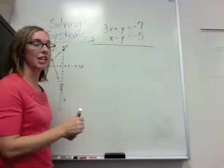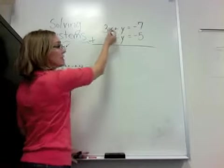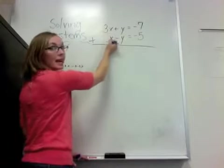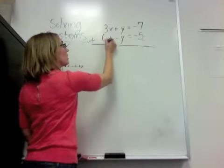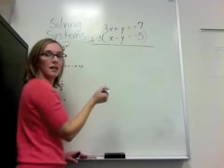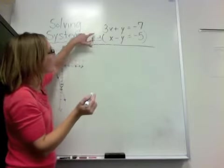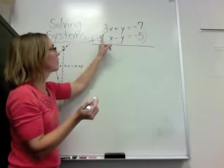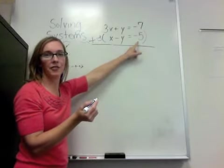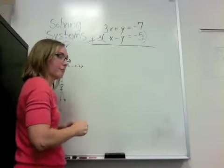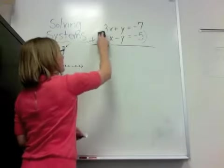If you wanted to make this a little more challenging, you could have used the x's. But you would want this to be a negative 3x. To do that, you would multiply this whole equation by negative 3. And I know you've got a glare on it. So that would give you negative 3x plus 3y equals positive 15. And then you can do the same thing we just did.